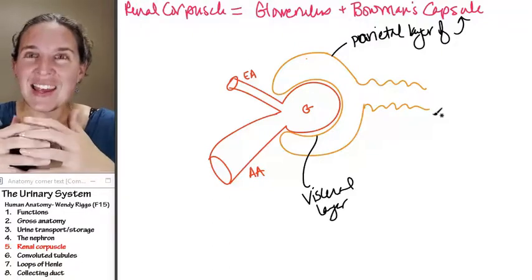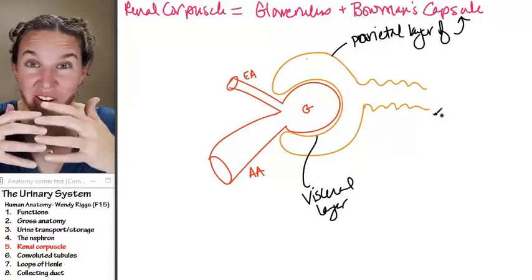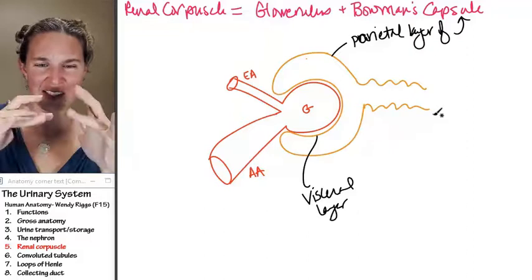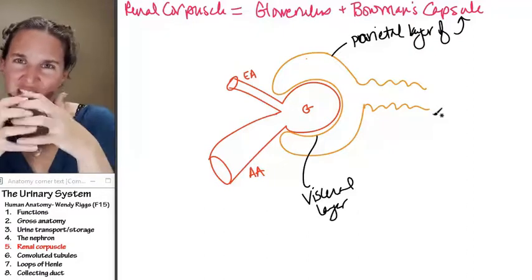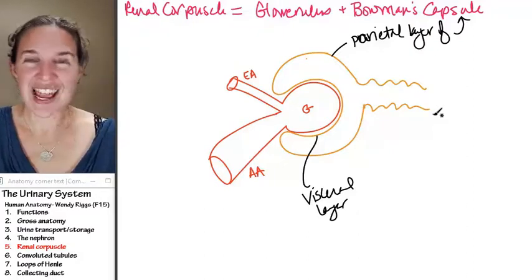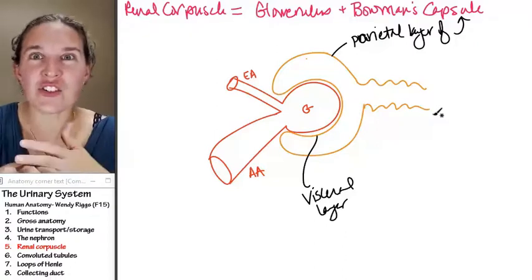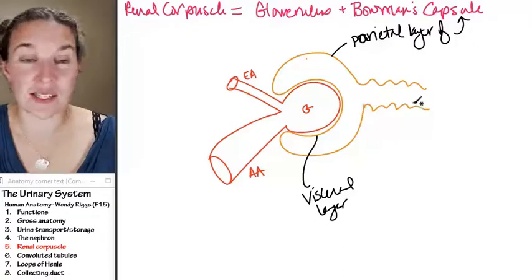And then the visceral layer of Bowman's capsule has these parts of the cells that have these little fingers that come out and interdigitate and create this sieve, a filtering system. Well, that's exactly what it is. It is a filtering system.